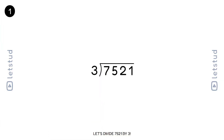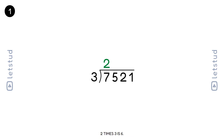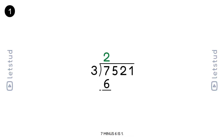Let's divide 7521 by 3. We look at the first digit, 7. 3 fits into 7 two times. 2 times 3 is 6. 7 minus 6 is 1.